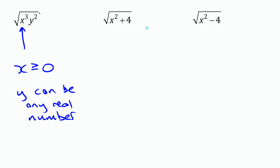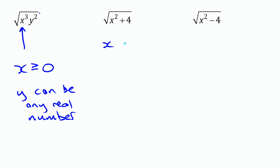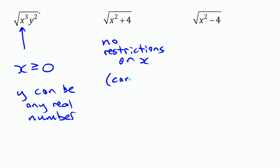This next one is square root of x squared plus four. For the same reason as the y squared case, since x is being squared, x can be any real number — whether positive, negative, or zero, x squared is never negative, and adding four makes it even more positive. So there are no restrictions on x here; x can be any real number.